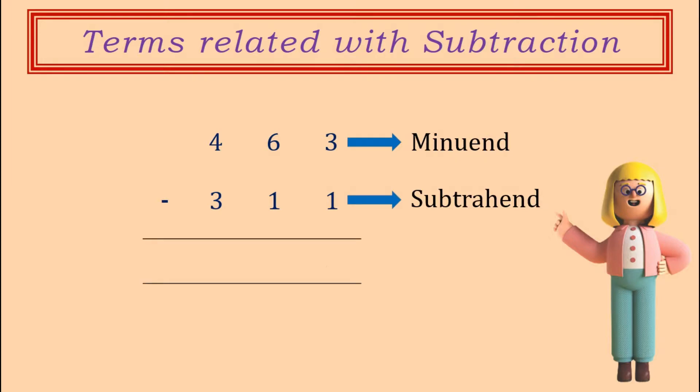The answer that we get after subtracting is called the difference. In the example shown here, 463 is the minuend, 311 is the subtrahend, and the result 152 is the difference.